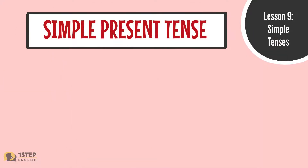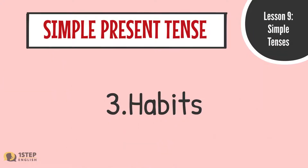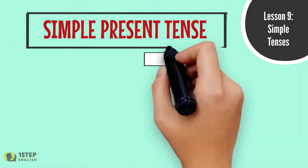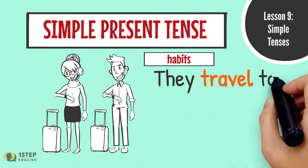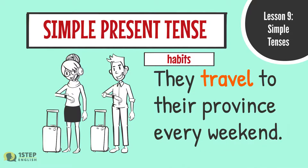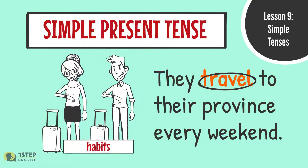We use the simple present tense for: 3. Habits — things that are always or generally true. For example, 'They travel to their province every weekend.' The verb 'travel' is in the simple present tense.